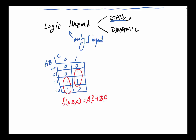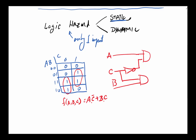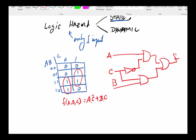We can implement this function by taking c in, a and c' through one AND gate, and b with c through another AND gate, combining them together with an OR gate to give us f. This is a simple enough example but it has the issue that causes logic hazards.